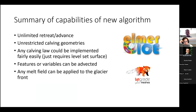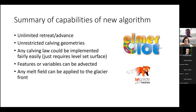To summarize the capabilities of the new algorithm: it allows unlimited retreat and advance of the glacier and unrestricted calving. With the crevasse depth calving law demonstrated, any calving law that can produce a level set surface could be implemented fairly easily. There is also potential for features and variables to be advected upstream with a fully Lagrangian mesh, and any melt field can be applied to the glacier front. Elmer does have plume solvers that could be easily coupled.